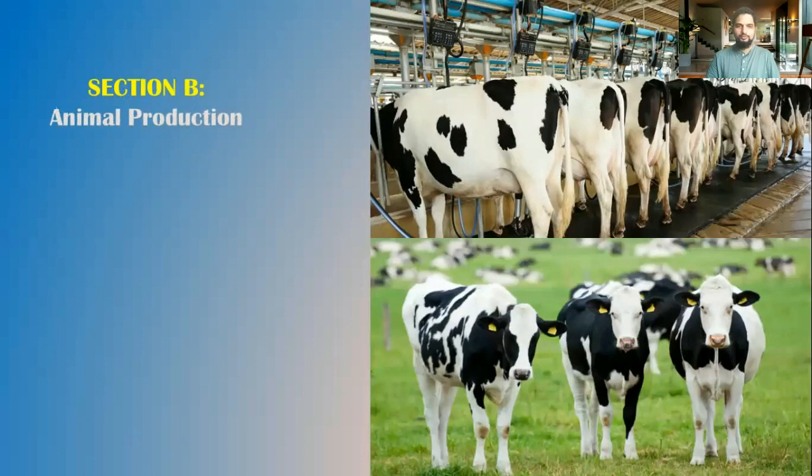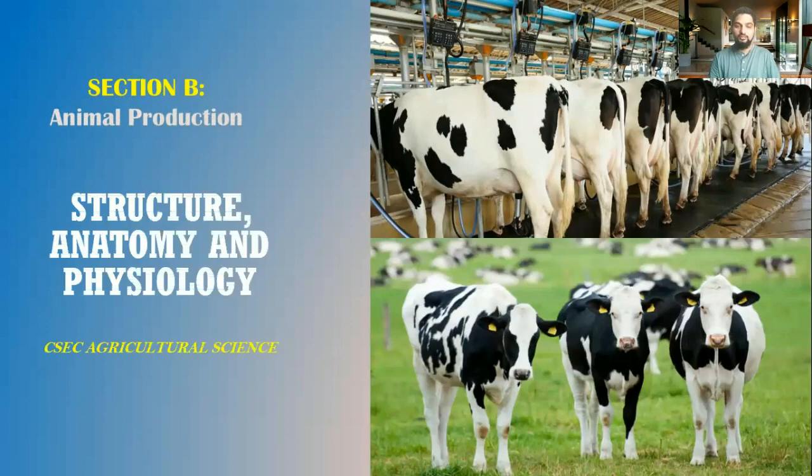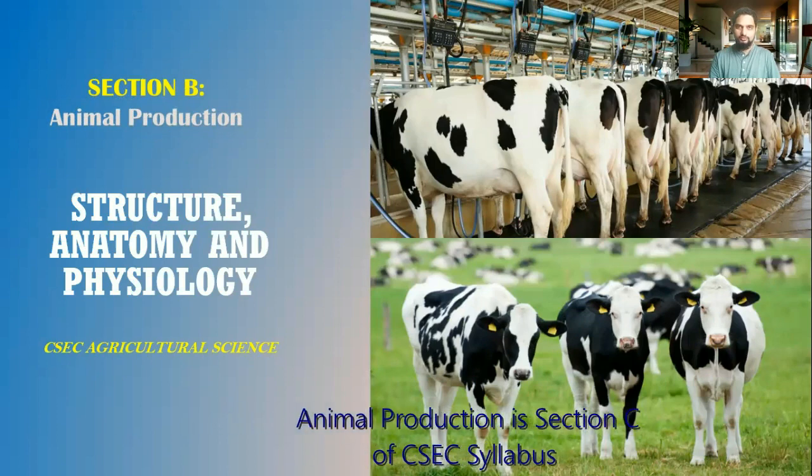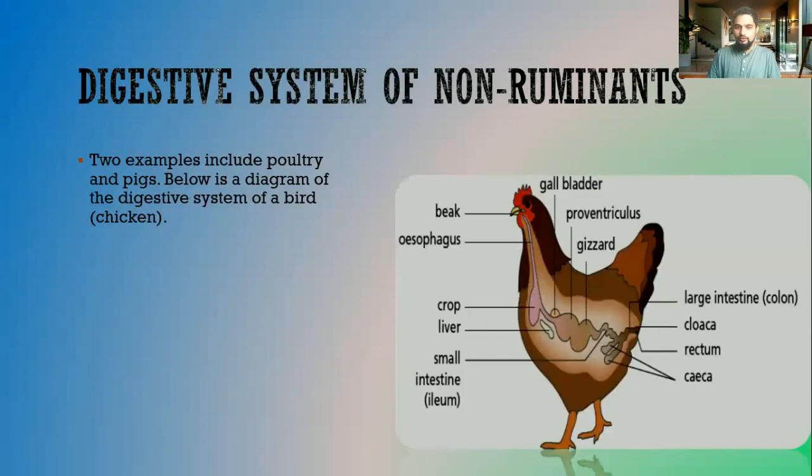Hello everyone! So what we'll be looking at would be the structure, anatomy and physiology of livestock. This is found in section C of your agricultural science syllabus. So moving on now we'll be looking at digestive system of non-ruminants and the digestive system of ruminants.